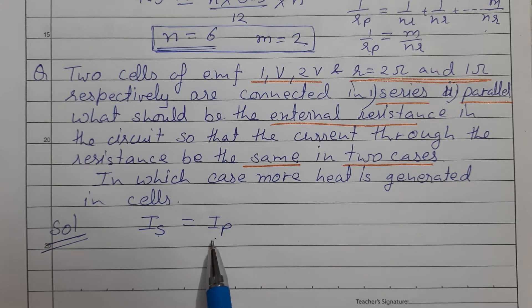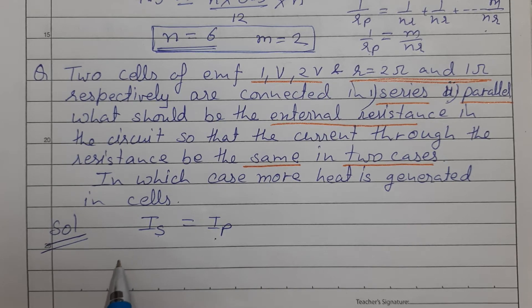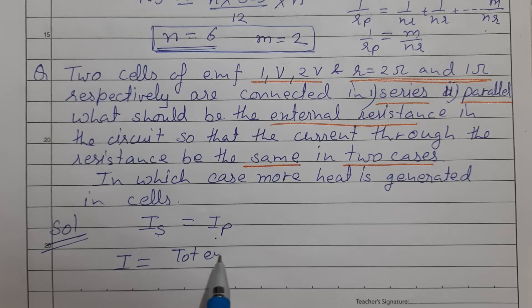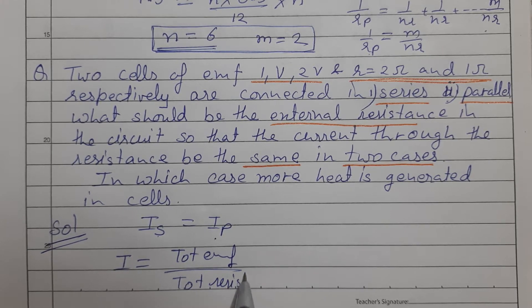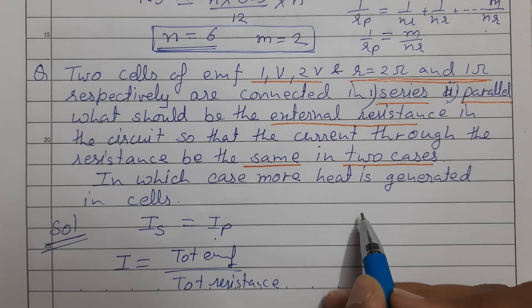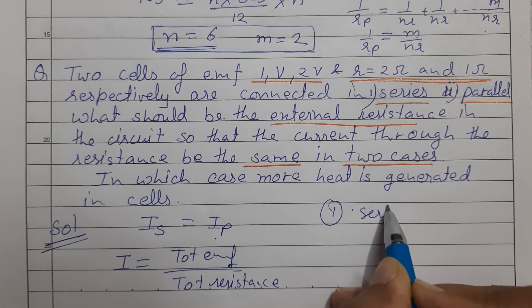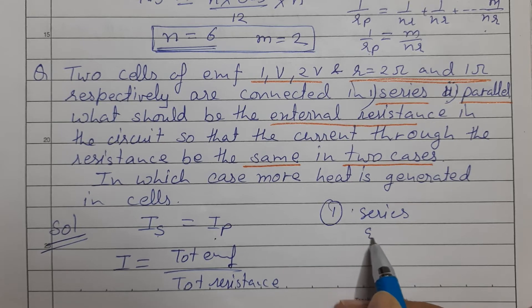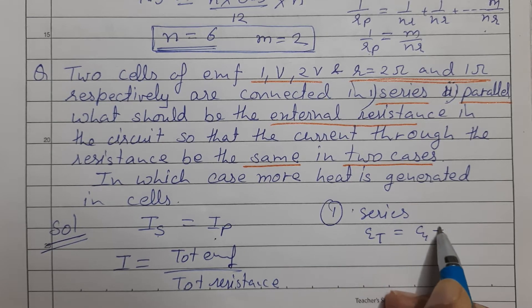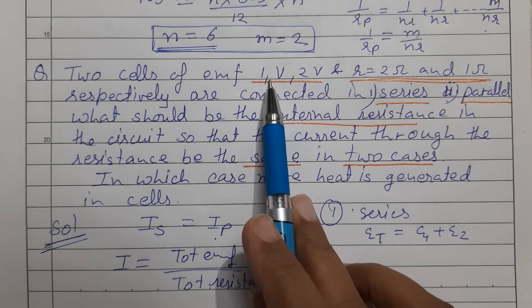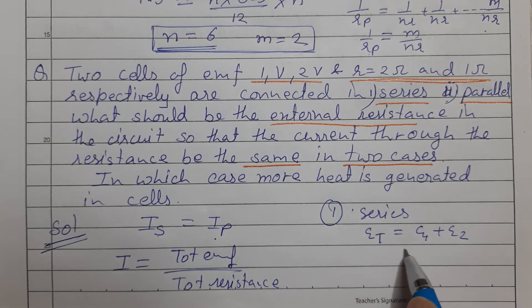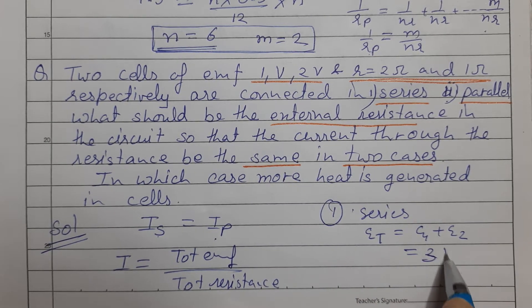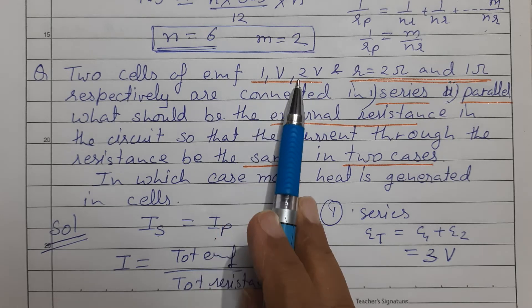The total current formula is total EMF divided by total resistance. For the series case, the total EMF is E1 plus E2. Substituting E1 equal to 1V and E2 equal to 2V, the net EMF for series is 3V.